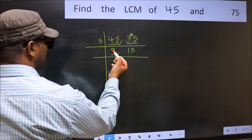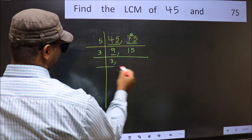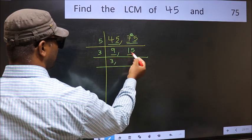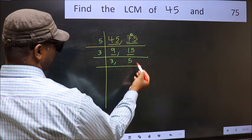Now here we have 9. 9 is 3 times 3 is 9. The other number is 15. When do we get 15 in the 3 table? 3 times 5 is 15.